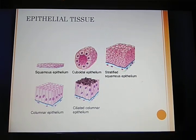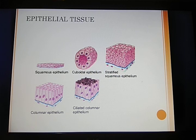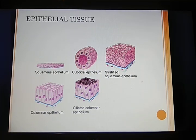We will see epithelial tissue first. In the picture it is showing 5 categories of tissues. Squamous epithelium — you can see it is a very thin layer cell and its normal function is for protection. These cells are found in the outer layer of skin. We will go to cuboidal epithelium — the name indicates it is cuboid in shape, normally found in the kidney, and its basic function is for absorption.